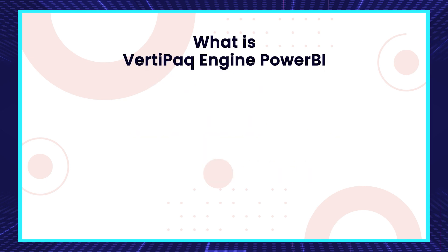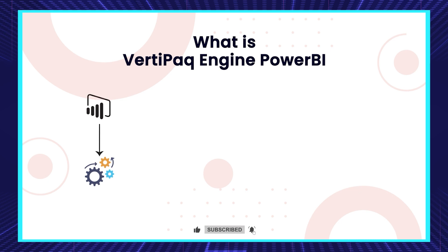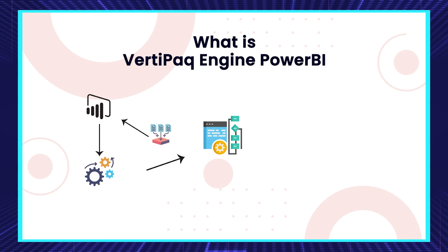VertiPaq is a compression engine used by Power BI. It's built into the Power BI architecture. As soon as the data is loaded into Power BI, the VertiPaq engine performs a series of algorithms on the data to compress it as much as possible. This helps in improving the memory footprint as well as increasing the performance of any DAX queries we write in Power BI.